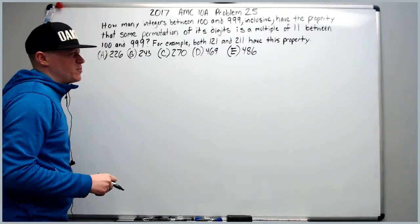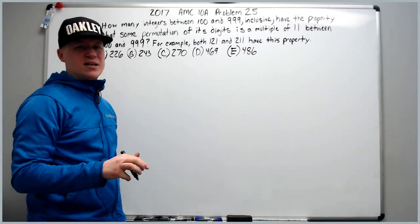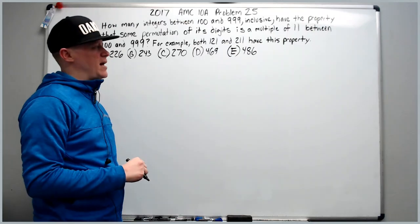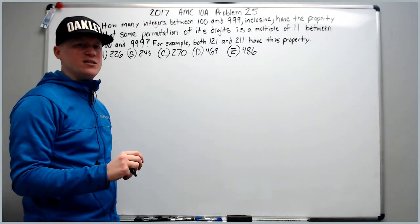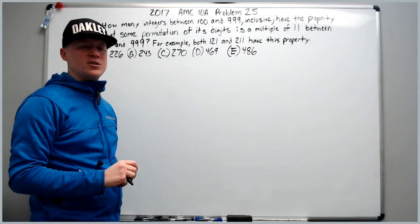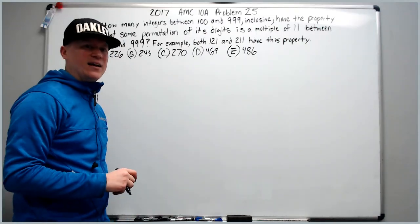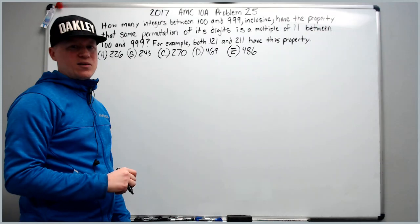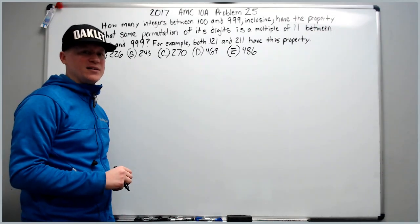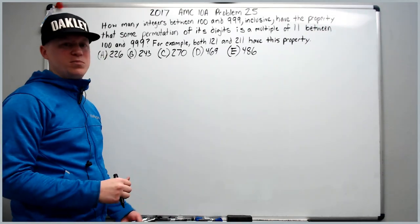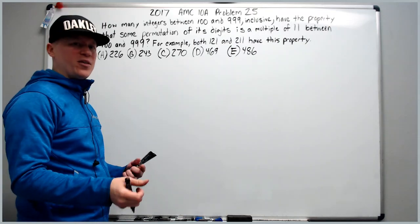How many integers between 100 and 999 inclusive have the property that some permutation, which just means arrangement, of its digits is a multiple of 11 between 100 and 999? For example, both 121 and 211, because I can rearrange it to become 121, have this property. So how do we approach a problem like this? We're going to answer in this video two different methods.